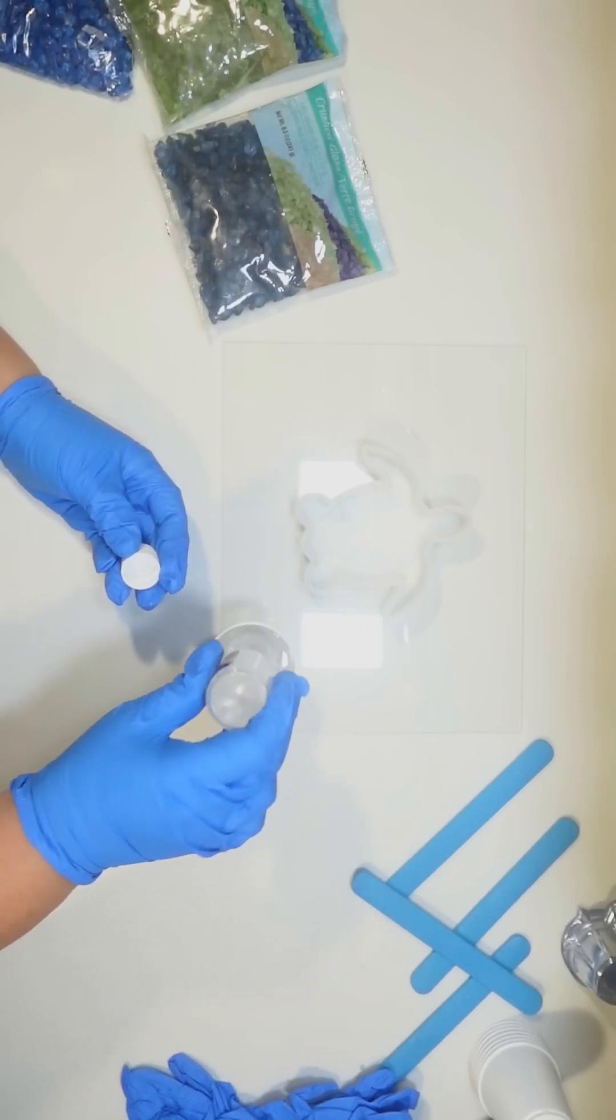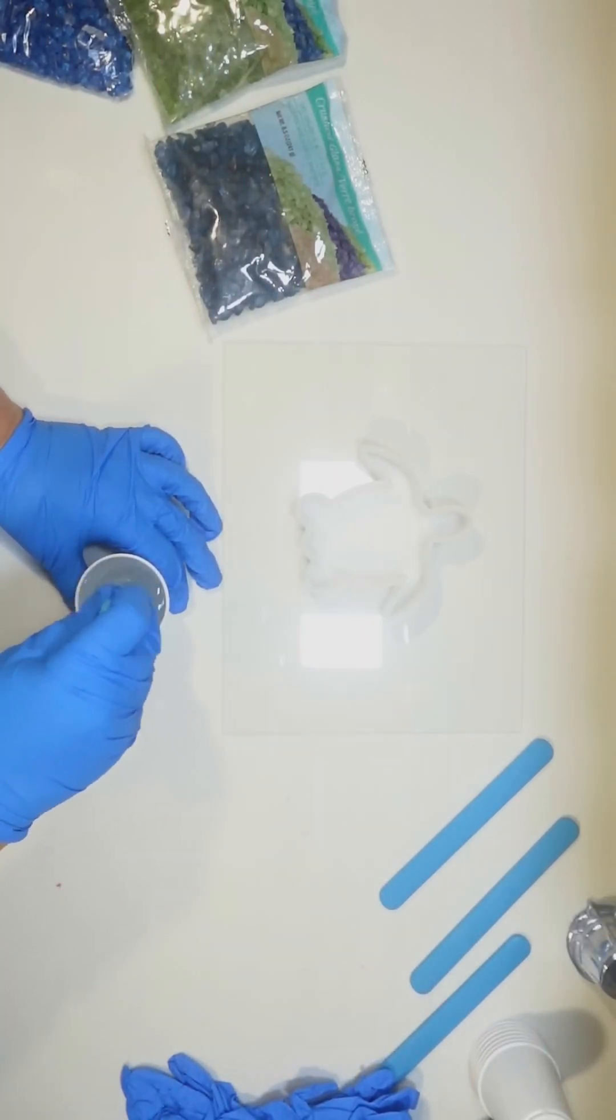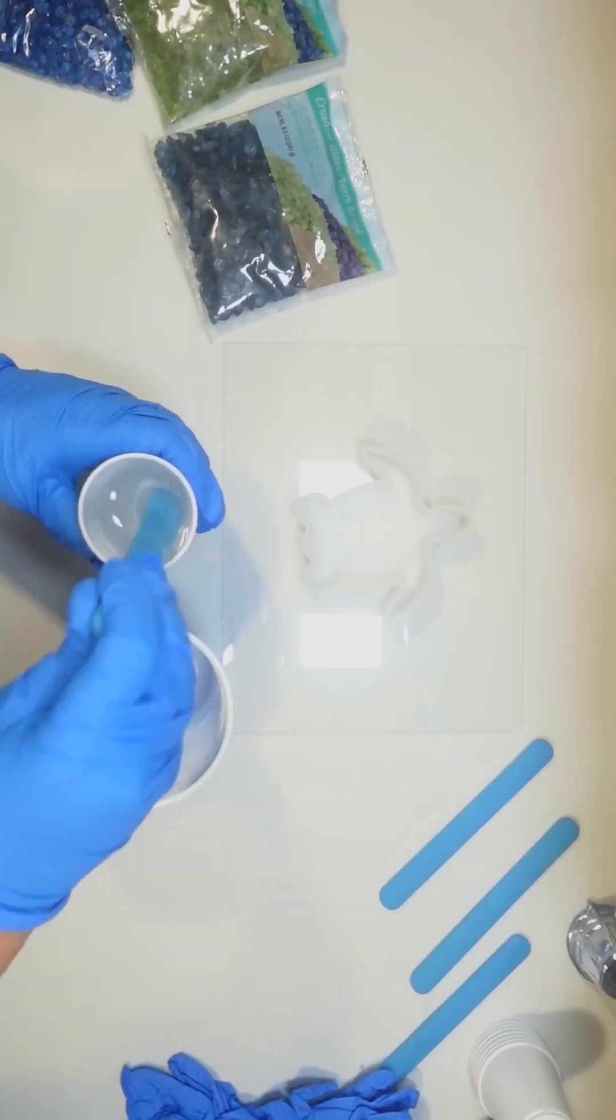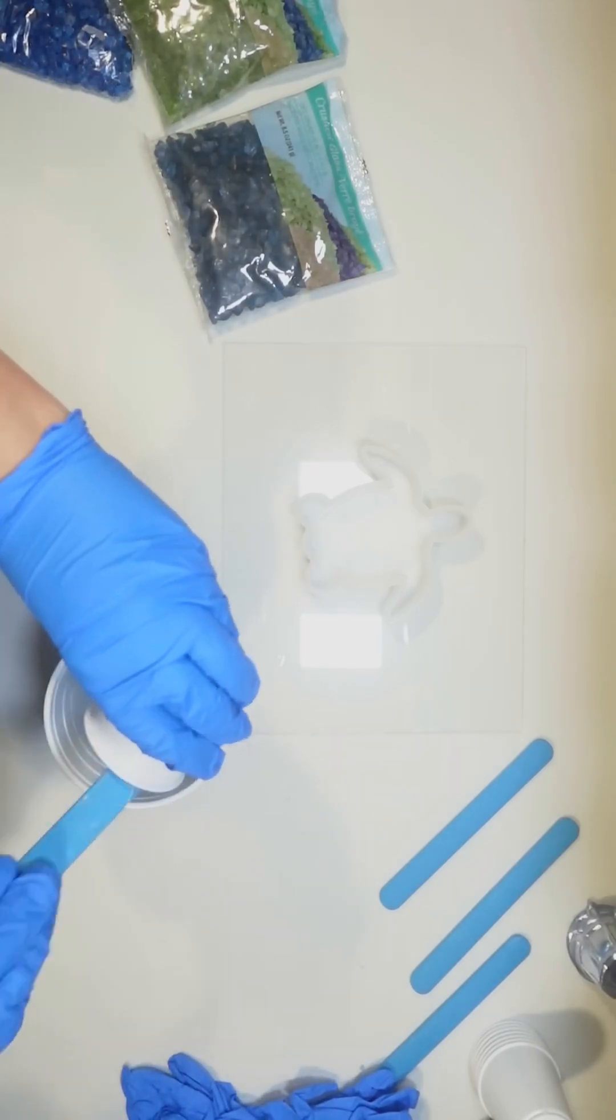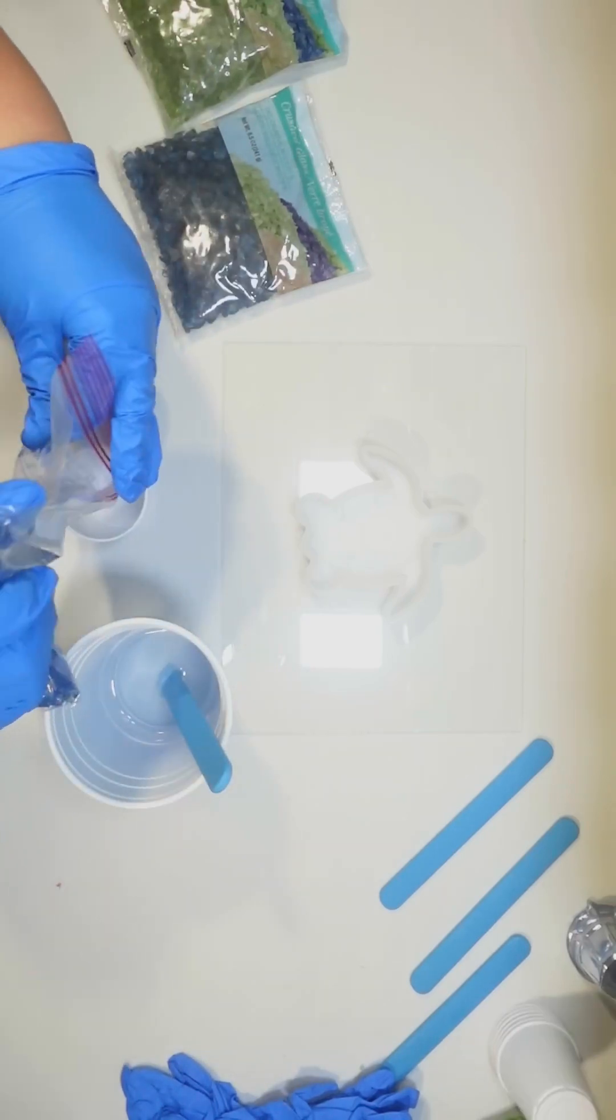It's a one-to-one mixture - Part A and Part B - so you need both of them, and then you can mix them up. I like to use these little plastic disposable bathroom cups from Target, and I'm just mixing it up with some silicone popsicle sticks that I got on Amazon. I really love those; it's really easy to reuse them.